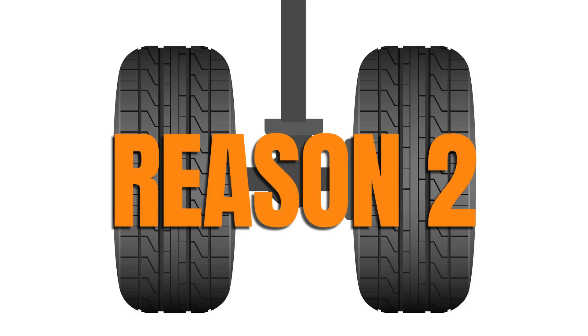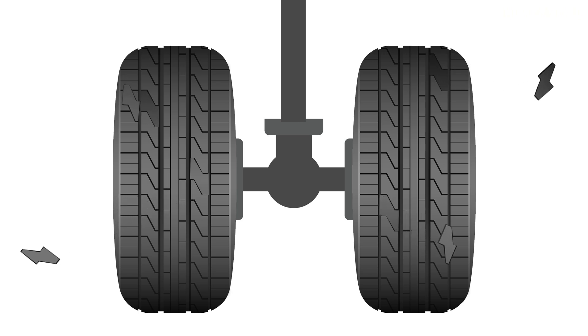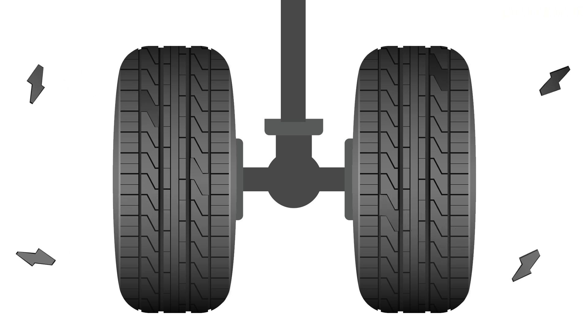Reason 2: Due to the immense weight and speed of a landing aircraft, small blocks of rubber from a zig-zag tyre pattern could break off, creating an unbalanced tyre and wear down quickly.